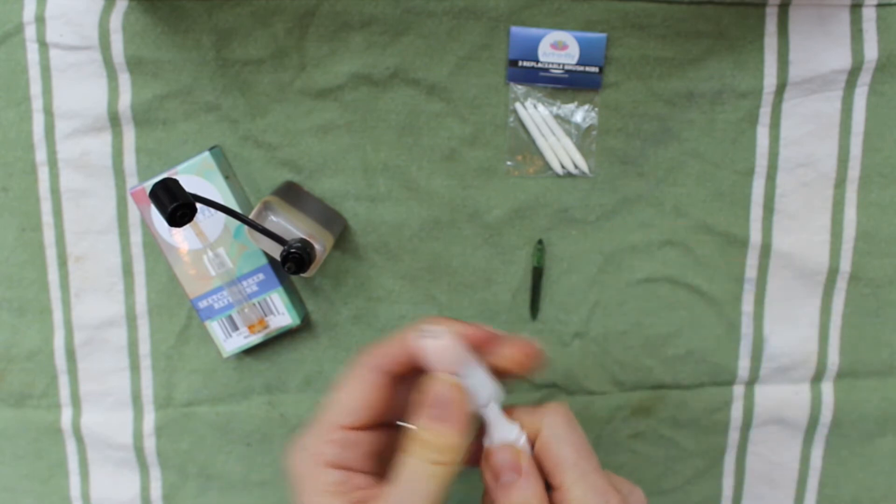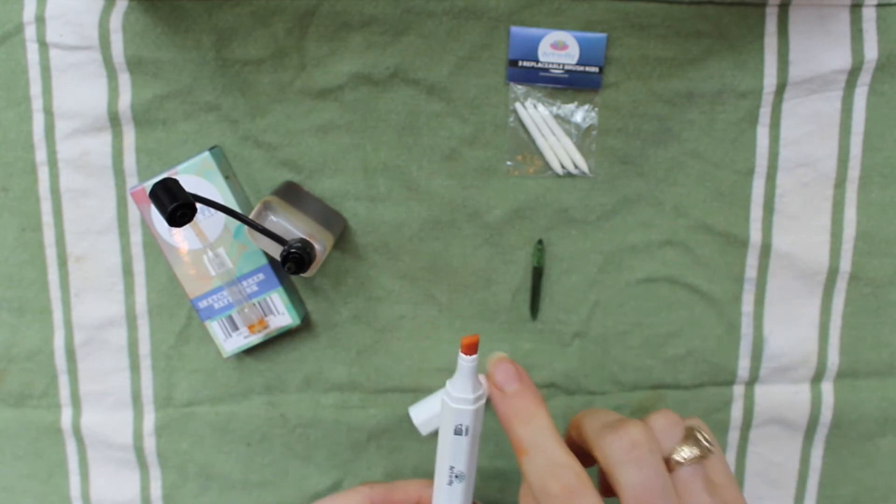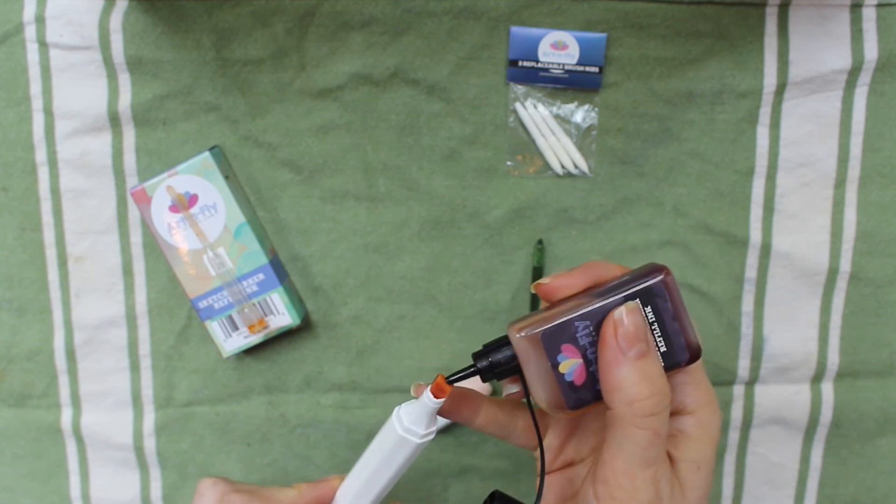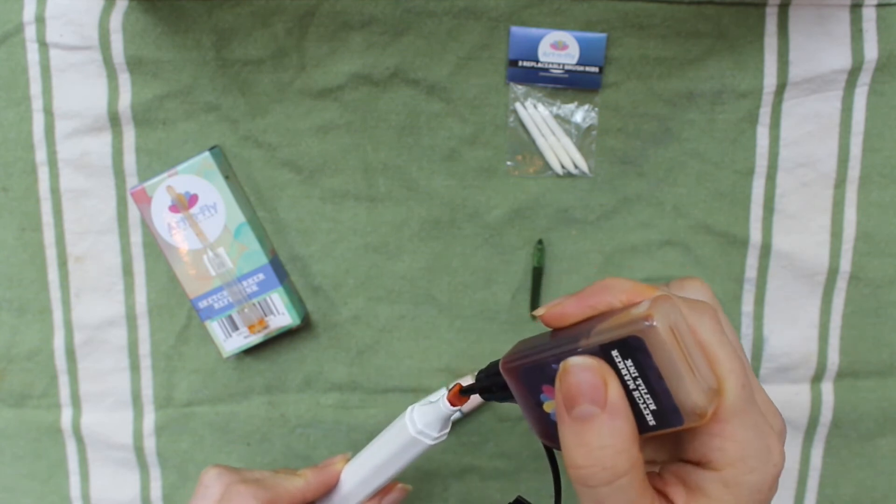And the other way, without removing a nib, is to press it against the chisel and fill it up like that.